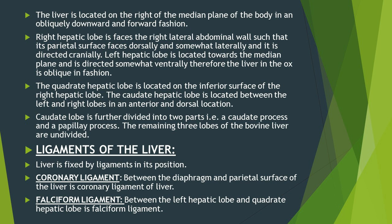The caudal vena cava from the heart also runs through the dorsal portion of the liver and then moves to the abdomen and then legs.